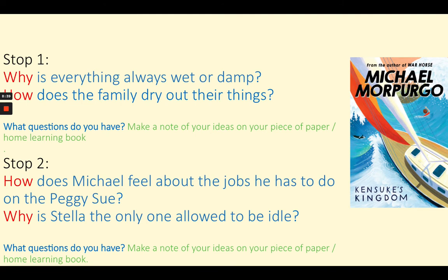'An escort of porpoises, perhaps, diving in and out of the waves. A family of dolphins swimming alongside, so close you could reach out and touch them. Whales, sharks, even turtles — we saw them all. My mother would be taking photographs, video and still, while my father and I fought over the binoculars. But Stella Artois was in her element, a proper sheepdog again, barking her commands at the creatures of the sea, herding them up from the deep.' How does Michael feel about the jobs he has to do on the Peggy Sue, and why was Stella the only one allowed to be idle? Pause here and write down two of your own questions, using different question words if possible.